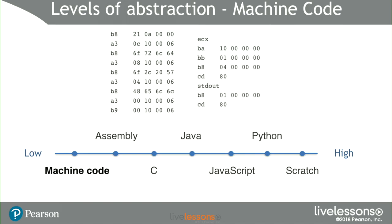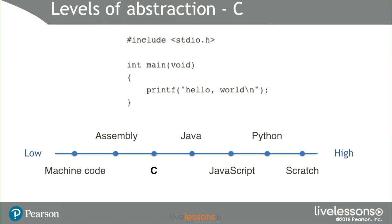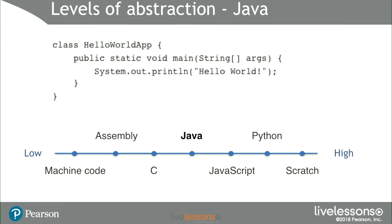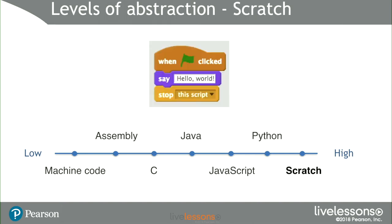You can see that machine code looks like this — there are more lines and it's harder for us to understand. Assembly makes it a little bit easier, putting things into English. Then there's C, which is useful for hardware and requires you to manage memory. This is the same hello world program in Java — there are still a lot of words, but more understandable, like 'System.out.println("Hello World")'. Then there's JavaScript, and finally Python and Scratch. The trend is to focus less on specifics and implementation, and more on what you want done.